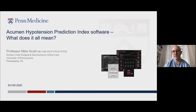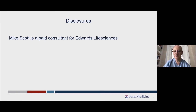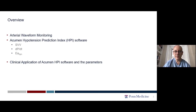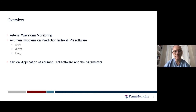Thank you very much for that kind introduction. This is my disclosure slide. I'm going to focus on the Acumen Hypotension Prediction Index software and give an overview of the monitor's graphic interface, what the actual HPI number represents, and discuss the three other parameters displayed in the secondary screen: SVV, dP/dT, and Ea-dyne. We're then going to discuss some of the clinical applications.